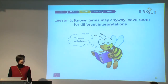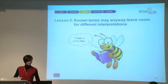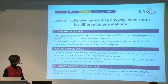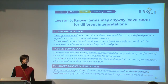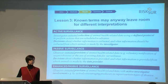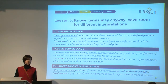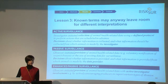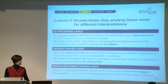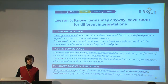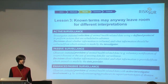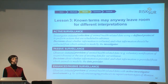This leads to the next lesson: even well-known terms may lead to different interpretations. Take for example the definitions of active, passive, and enhanced passive surveillance. Active surveillance is the collection of data promoted, decided, and guided by the investigator. Passive surveillance is the provision of animal health data observed where the decision relies on the data provider. Enhanced passive is again an observed-initiated provision but with active involvement of the investigator. This seems clear, but there are instances where it's hard to know which of the three applies.